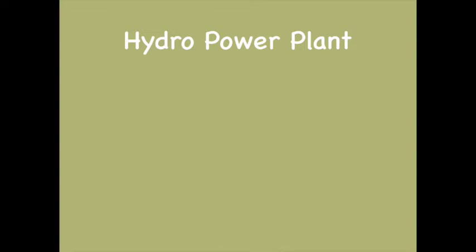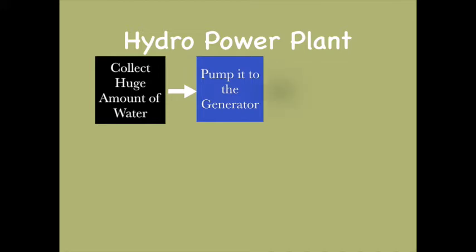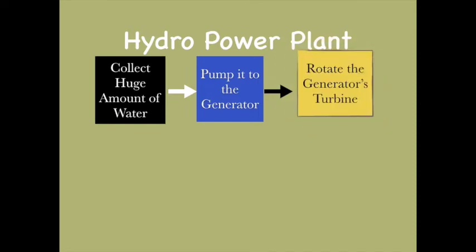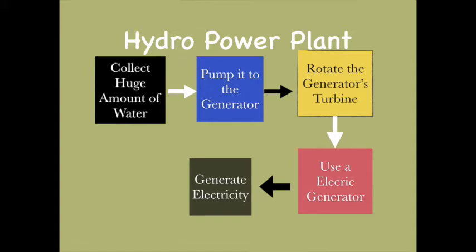On similar lines, in a hydropower plant, huge amounts of water are collected. This water is sent to the generator with the help of a pump. The high-pressure water rotates the generator's turbine, and the rotating turbine produces electrical energy — that is how electricity is generated in a hydropower plant.